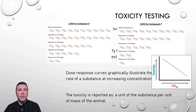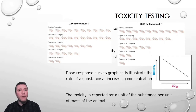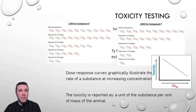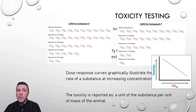For dose-response experiments that measure the sublethal effects of a substance, rather than LD50, ED50 is used instead. The E stands for effect and represents the dosage required to trigger a sublethal effect in 50% of a test population. Commonly studied sublethal effects include carcinogenicity — the ability of a substance to cause cancer — teratogenicity, the ability to cause birth defects, and mutagenicity, the ability to cause mutations to DNA.